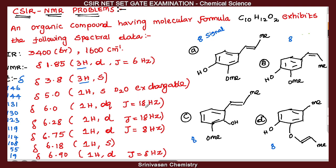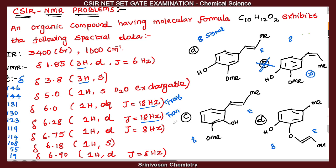The coupling constant J value is 18 Hz. A J value of 18 Hz corresponds to a trans C=C double bond — a trans molecule. So option B is a Z (cis) molecule, option B is Z configuration. Only the trans molecule gives J equal to approximately 18 Hz. So options A, C, and D are trans molecules.